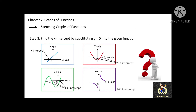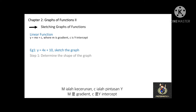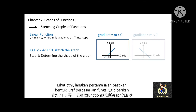Let's see an example of a linear function graph. The general linear equation is y = mx + c, where m is the gradient and c is the y-intercept. In this example, the equation is y = 4x + 10. Note that the highest power of x for a linear equation is 1. For gradient value greater than 0, the line is going up. On the other hand, for gradient value less than 0, the line is going down.